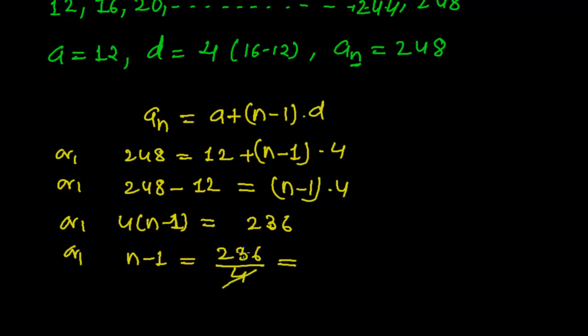So 4, 5s are 20, and then 36, 4, 9s are 36. So it is 59. Therefore, n equals to 59 plus 1, that is 60.